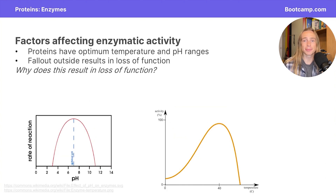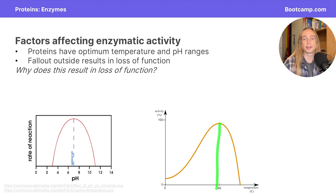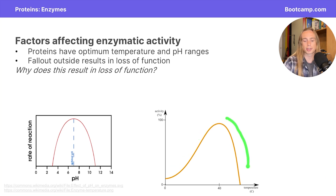Temperature and pH both affect enzymatic activity. Looking at the image on the left, this enzyme has an optimal pH where the rate of reaction is highest. As we increase or decrease pH, enzymatic activity begins to decrease. The image on the right shows this enzyme has an optimal temperature at around 39 degrees, which is about body temperature. If we decrease temperature, the rate of reaction slowly decreases, but if we increase temperature, the reaction rate falls off really rapidly.